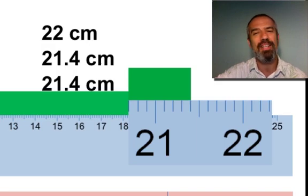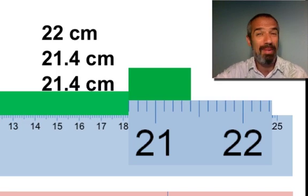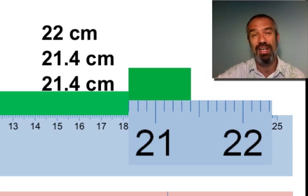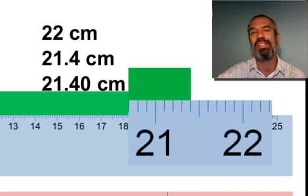That may look correct, but think about it. That's no more precise than the previous measurement. 21.4 in science means 21.4, maybe 21.5 or even 21.6. And this clearly is not 21.4-ish. We're certain of that 4 now. And we're guessing that it's right on the mark. So how do we show that?